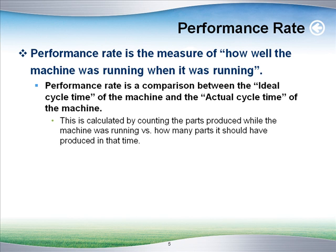The next part of the formula is performance rate. Performance rate is the measure of how well the machine was running when it was running. Performance rate is really a comparison between the ideal cycle time and the actual cycle time of the machine. So if your machine is supposed to put out one good part every 30 seconds but it's putting out one every 60 seconds, obviously you have a real problem. On the other hand, if your machine puts one out every 15 seconds, that could be a benefit, or it could cause you to start building way too much inventory — but we'll talk about that another time.